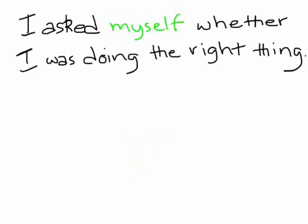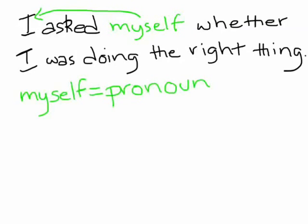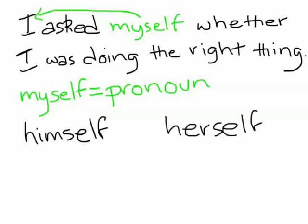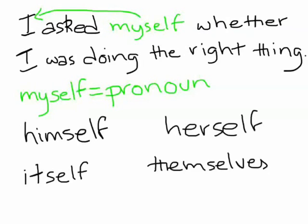The sentence you see is an example of the correct usage of 'myself.' Can you identify what type of word it is? Since it is being used to refer to the subject, which is a noun, it is obviously a pronoun. But 'myself' is not any kind of pronoun — it is a reflexive pronoun, like 'himself,' 'herself,' 'itself,' and 'themselves.'